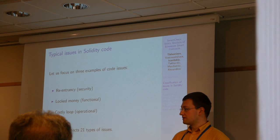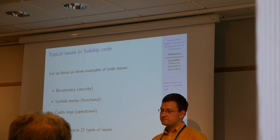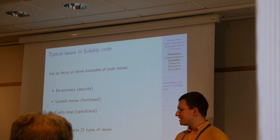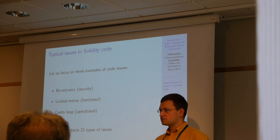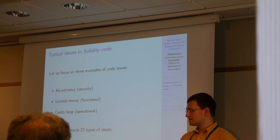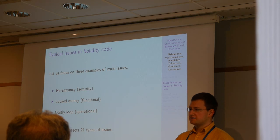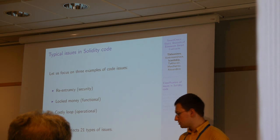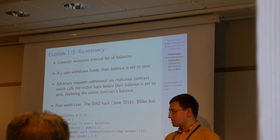Now I will describe three of these categories using examples. We will focus on three very important and infamous vulnerabilities: re-entrancy, which is a security issue; blocked money, which we consider a functional issue; and costly loop, which is an operational issue. Inside the SmartCheck tool, we have rules for 21 types of issues, and many rules include many separate patterns. Here we will focus on three of them.